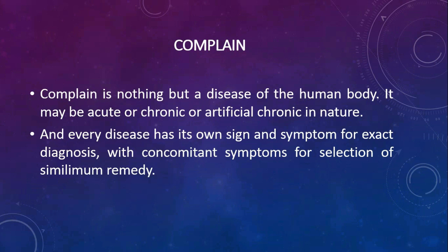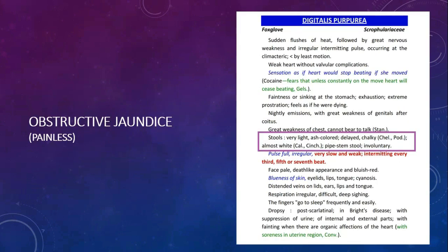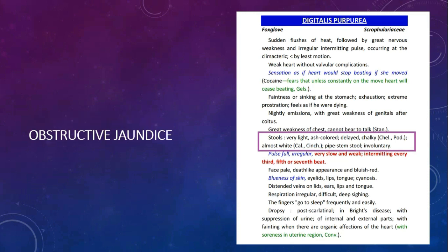Now the second part after cause is complaint. Complaint is nothing but a disease of the human body — it may be acute, chronic or artificial chronic in nature. Every disease has its own signs and symptoms for exact diagnosis, with concomitant symptoms for selection of similimum remedy. For example in Digitalis Purpurea: stools very light, ash-colored, or delayed chalky — also present in Chelidonium and Podophyllum — or almost white — also present in Calcarea and Cinchona — or pipe stem stool, involuntary. All these symptoms are features of obstructive jaundice.